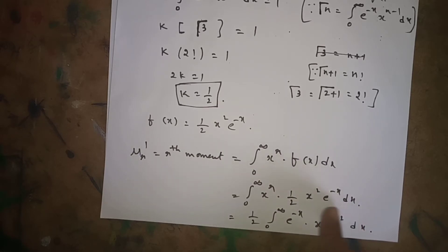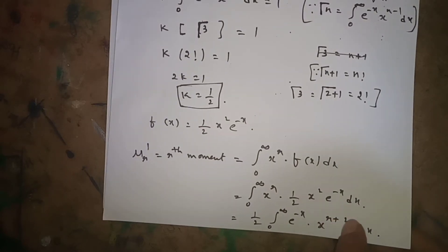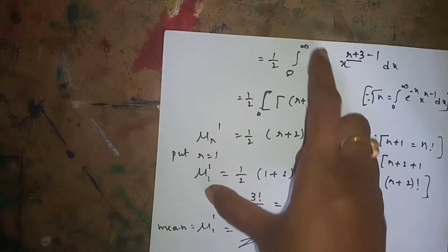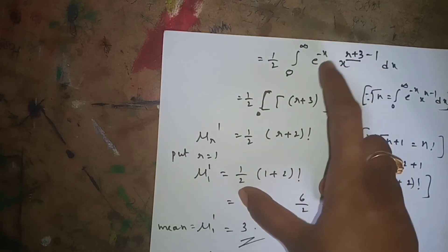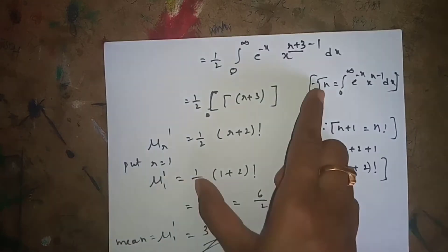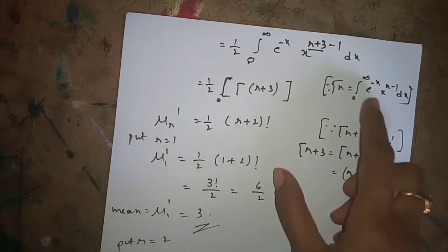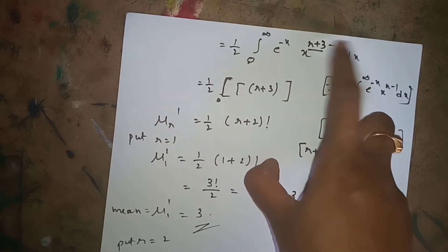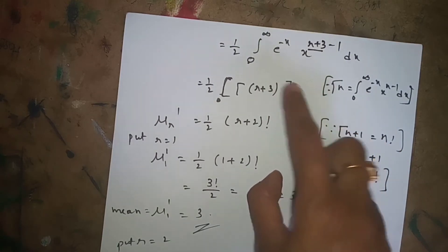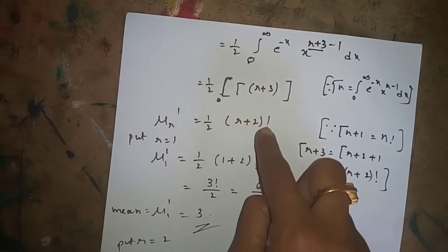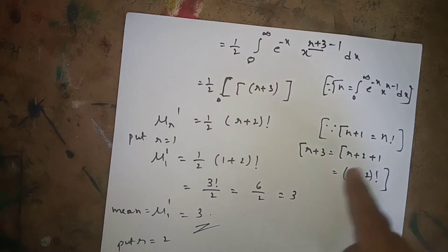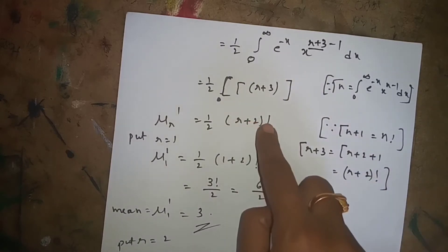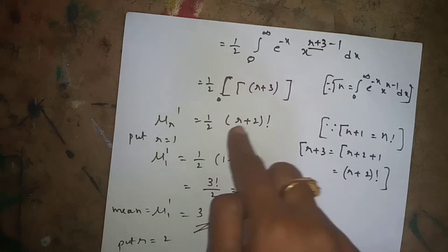We rewrite x^(r+2) as x^(r+3-1), so the integral becomes (1/2) times the integral from 0 to infinity of e^(-x)·x^(r+3-1)dx. This is in the form of the gamma function Γ(n) = ∫e^(-x)·x^(n-1)dx with n = r+3. So μ'_r = (1/2)·Γ(r+3). Using Γ(r+3) = Γ((r+2)+1) = (r+2)!, we get μ'_r = (1/2)·(r+2)!.